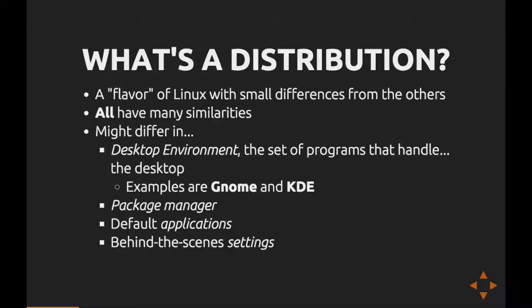With regards to what Linux is, let's step back and talk about what exactly a distribution is. A distribution is kind of a flavor of Linux that has a few small differences. They all share the same kernel but differ in tools available — many use the Bash shell, for example. You'll see differences in desktop environments like GNOME, KDE, or XFCE (which is used on the lab machines), package managers, default applications, and behind-the-scenes things like the init system, which helps start up all the processes running on your machine.